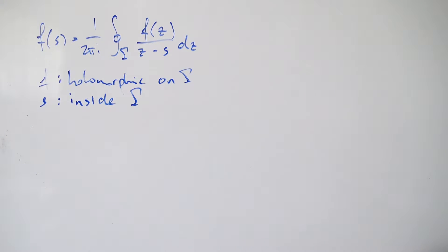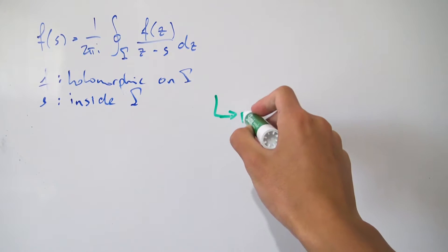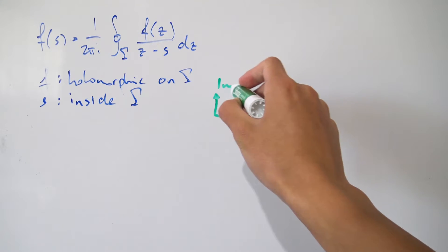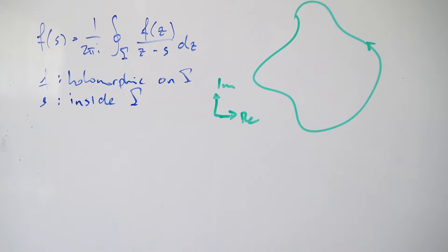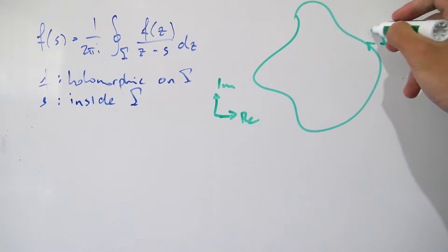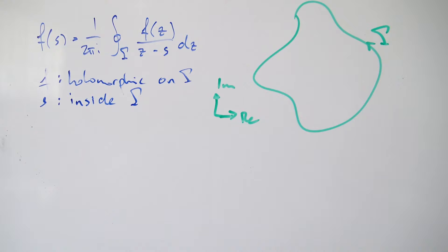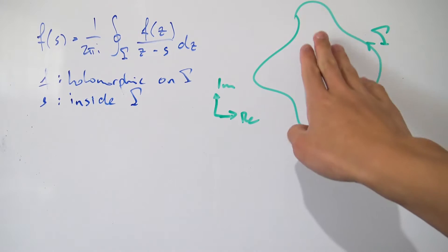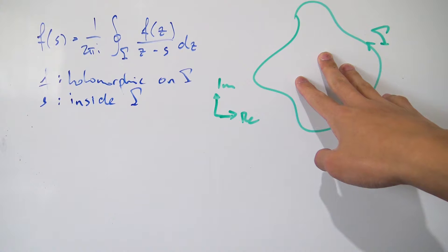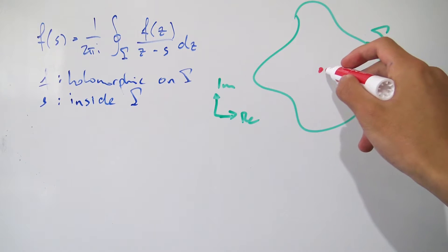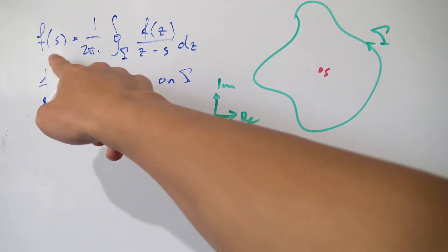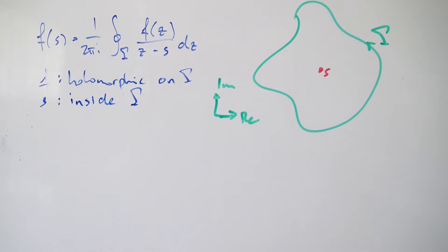Let's say this is the complex plane with a real axis and an imaginary axis, and we have some curvy path traversed in the positive direction by convention. Assuming f is holomorphic everywhere inside gamma and s is some point inside gamma, then we can express f(s) as this contour integral. Those are the two conditions that must be met for this proof to work.